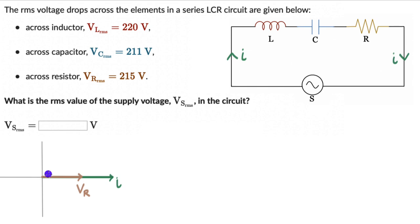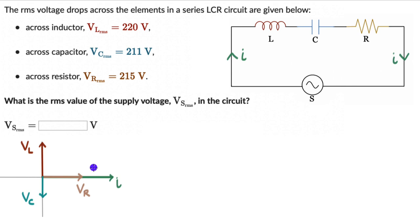Since V_L leads by 90 degrees, the voltage across the inductor is drawn 90 degrees ahead of the current — pointing upward. The voltage across the capacitor lags the current by 90 degrees, so that vector is still vertical but points downward. The length of these phasors represents the peak values — V₀ across L, V₀ across C, and V₀ across R.